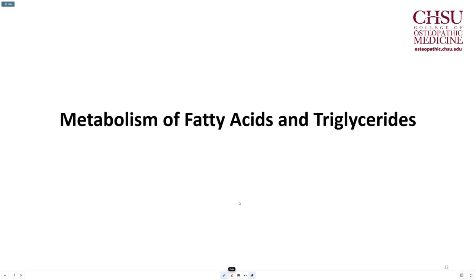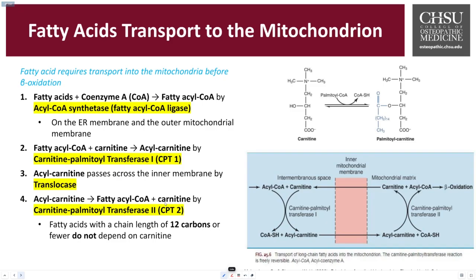Welcome back to Metabolism of Fatty Acids and Triglycerides. Fatty acid requires transport into the mitochondria before beta-oxidation can occur. This is the process by which fatty acid is broken down to produce energy. The mitochondria, which is our powerhouse of the cell, produces a lot of ATP and is the primary site for beta-oxidation.